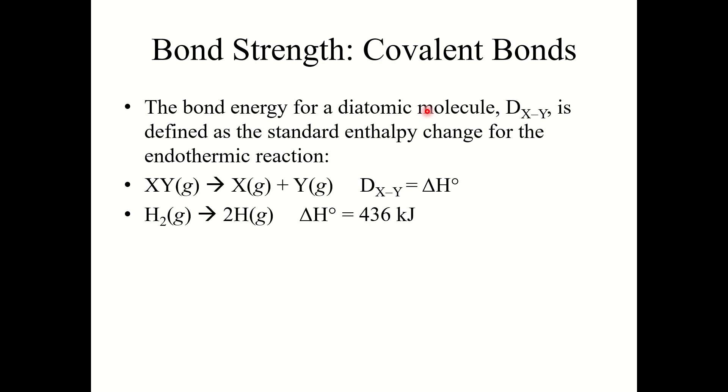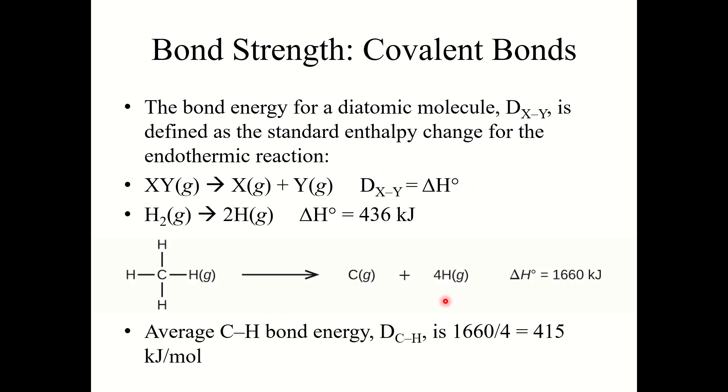The bond energy for a diatomic molecule is defined as the standard enthalpy change for the endothermic reaction XY forms X plus Y. Here's another example. If we took a molecule of methane and broke it into carbon and 4 hydrogen atoms, the enthalpy change of that reaction is 1660 kilojoules. So the average C–H bond energy must have been 415 kilojoules per mole. That is where this definition comes from.